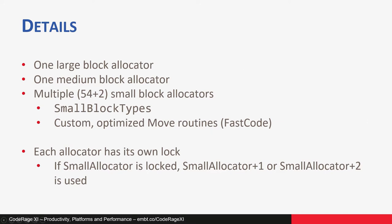Each allocator can only be accessed from one thread at a time, and to enforce that, each allocator has its own lock — just a boolean variable containing 0 or 1. To allocate memory, GetMem must find the appropriate allocator, lock it, get the memory from it, and unlock it. In a multi-threaded environment this can represent a problem — we can reasonably expect that threads will often try to allocate memory of a similar size at the same time, so they will effectively be fighting for allocators. FastMM contains a trick which speeds up the program on such occasions, at the price of larger memory usage.